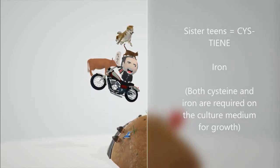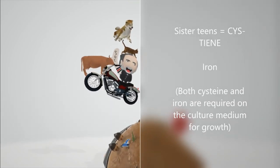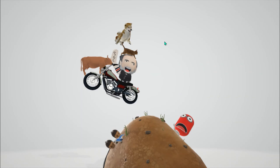If we note in the ground over here — I know this is kind of random — we find these two teen girls. The two teens, the sister teens, and they're looking at iron. This is because Pasteurella requires cysteine enrichment in culture media, as it requires cysteine for growth with iron.